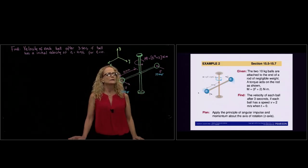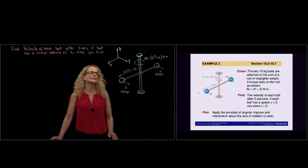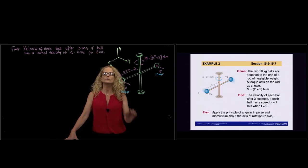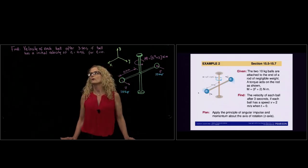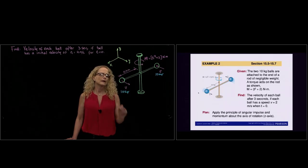And so we have two velocities, and we are being asked to find the velocity of each ball after 3 seconds if each ball has an initial velocity of 2 meters per second when time is equal to 0.